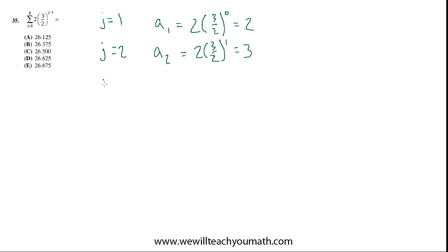When j equals three, we're finding a three. And the pattern continues. Now it's going to be two times three halves to the second power, which is two times nine over four, which is nine over two. And I'm not even going to simplify it to a mixed number or a decimal. I'd rather just have an exact improper fraction.